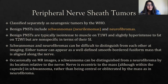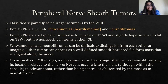Peripheral nerve sheath tumors are classified separately as neurogenic tumors by the WHO. Benign peripheral nerve sheath tumors include schwannomas and neurofibromas. They are typically isointense to muscle on T1 and slightly hyperintense to fat on T2, but are non-specific in terms of signal intensity. Schwannomas and neurofibromas can be difficult to distinguish from each other on imaging. Either tumor can appear as a well-defined, smooth-bordered, fusiform mass aligned along the nerve. On MRI, a schwannoma can occasionally be distinguished by its eccentric location relative to the nerve but within the capsule, whereas in neurofibromas the nerve is central or obliterated by the mass.